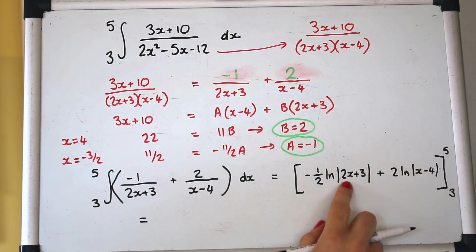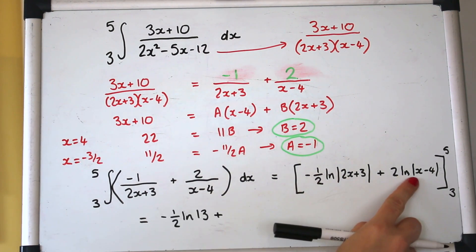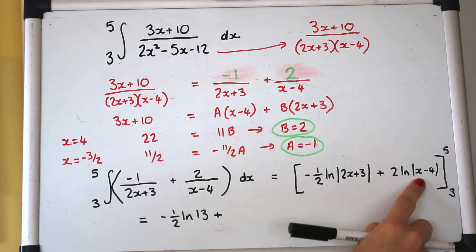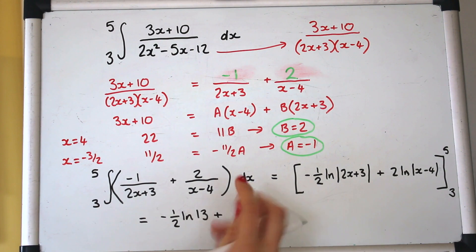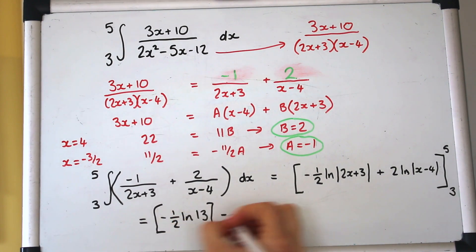So we'll start with 5 in here will give us log of 13. Putting the 5 into here 5 minus 4 is 1. Log of 1 I hope you know is 0 so that would just cancel out that bit. So that's 0 and then we'll take away just keep that in a square bracket for now.